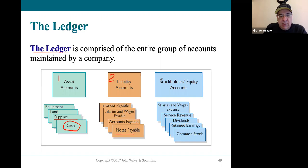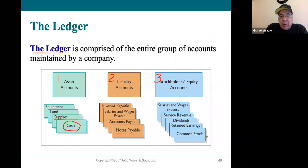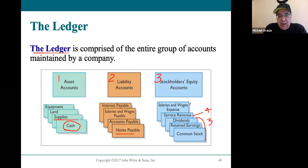After the liability accounts are listed, there's a somewhat unusual order to the equity accounts. Common stock and retained earnings would be listed, and the dividends account is in that group as well. So the next thing you would see in the ledger are the common stock account, retained earnings account, and the dividends account. You would then see the revenue accounts listed, and then everything would end with all the expense accounts.